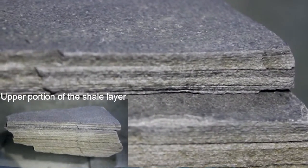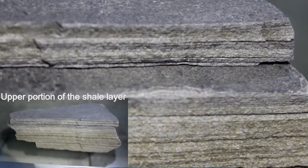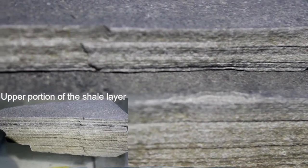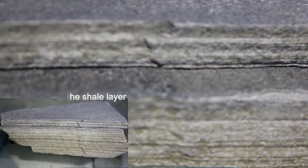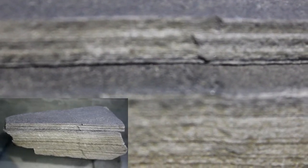Shale is characterized by breaks along thin laminae or parallel layering or bedding less than 1 cm in thickness called fissility. It is the most common sedimentary rock.